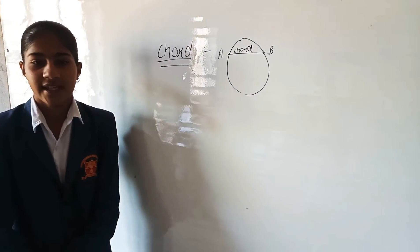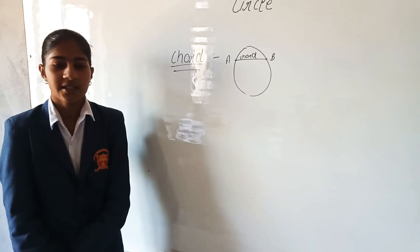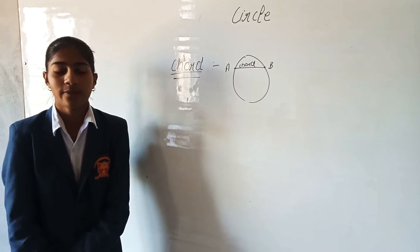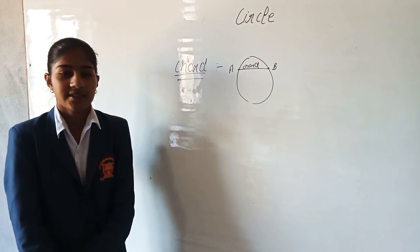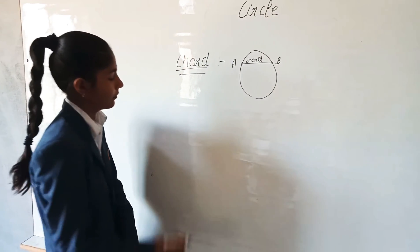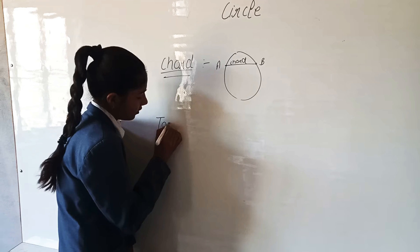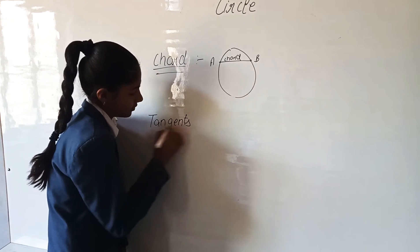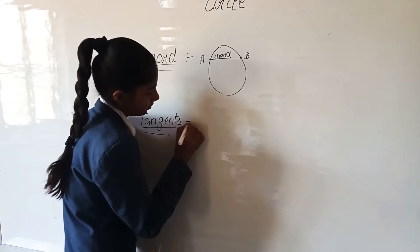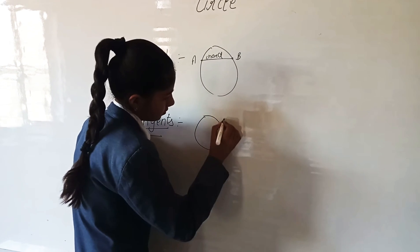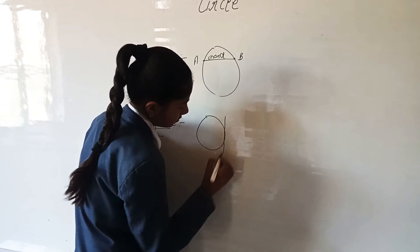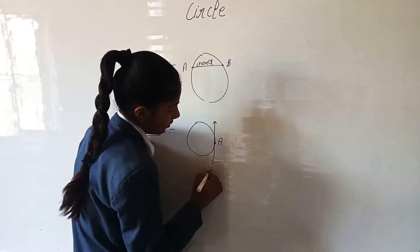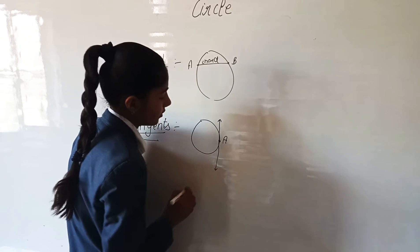Next is tangent. What is a tangent? A tangent is a line that touches the circle at only one point, exteriorly. We can draw infinitely many tangents to a circle. It touches the circle at point A and this is known as the tangent.